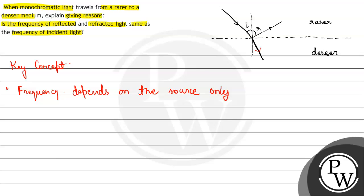Whether the light travels from a rarer to denser medium, it has only one source which is here. So the frequency only depends on the source, and hence the frequency of the reflected light is equal to frequency of the refracted light.